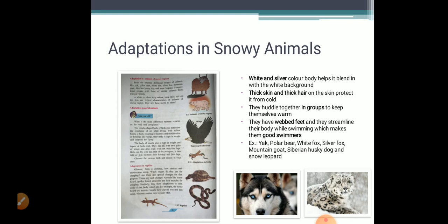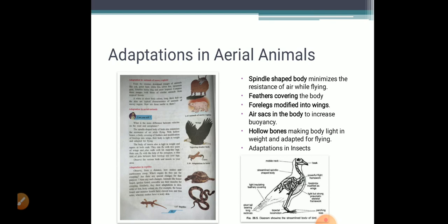Let us see how the aerial animals have adapted themselves. Did you observe the difference in the vehicles on the road and the aeroplanes? The major difference is the shape of the vehicles and the aeroplanes. The spindle shape body of the birds minimizes the resistance of air while flying, while hollow bones, a body covering of feathers and modification of four legs into wings make their body light in weight and adapted for flying.